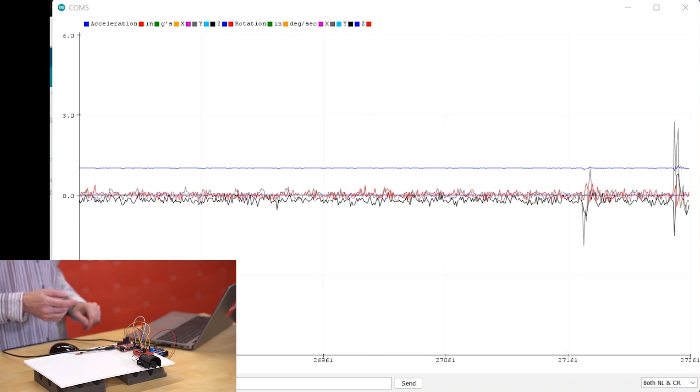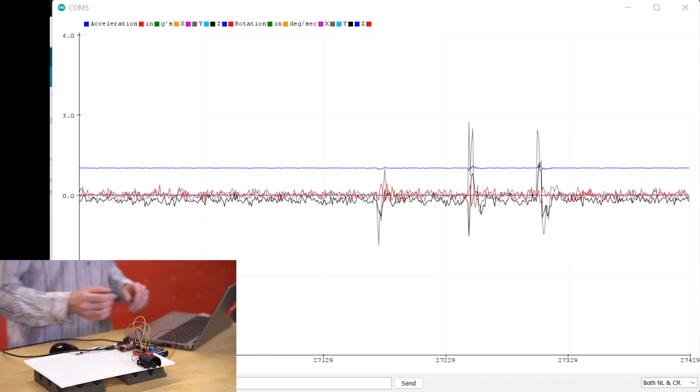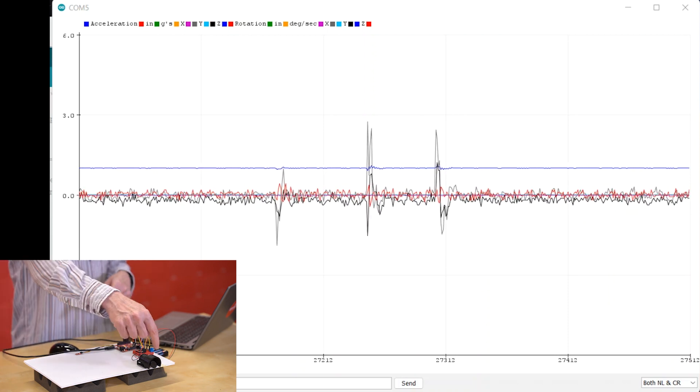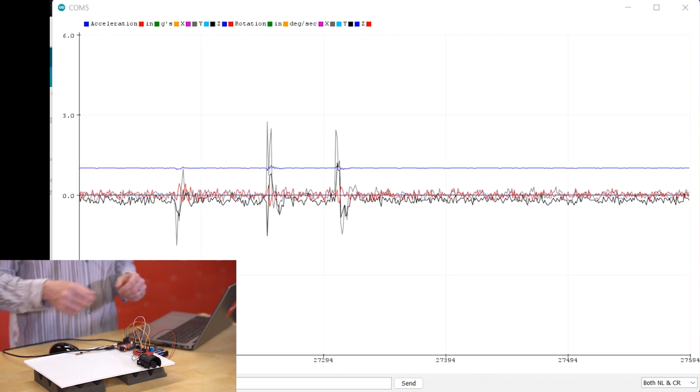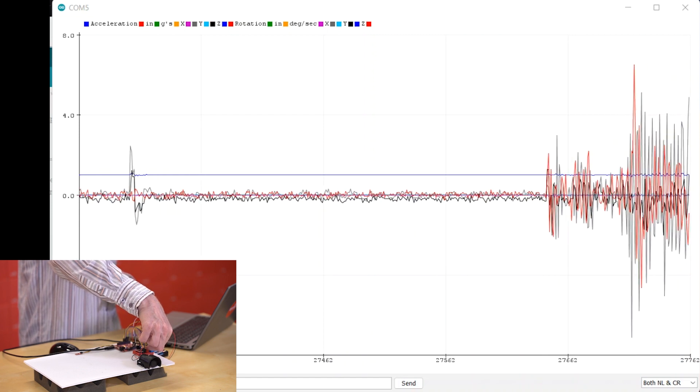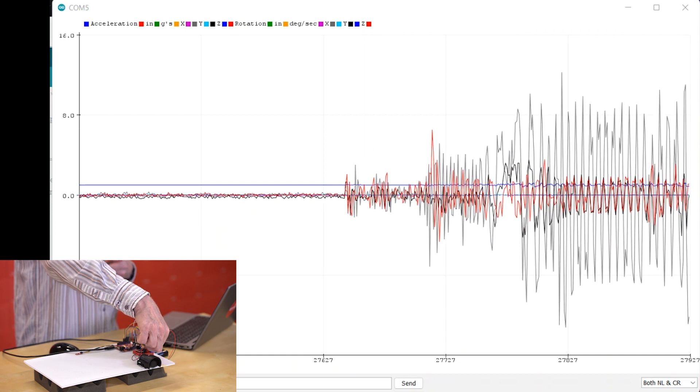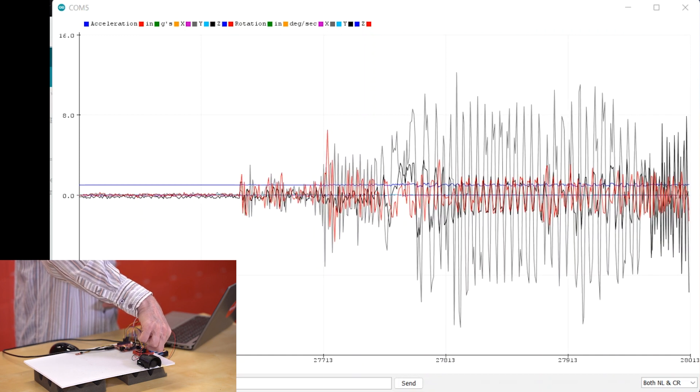You can see how sensitive this thing is. A little tap on the table over here is spiking it on the serial monitor. So I've got it on here. I've got a motor with an offset flywheel. And by changing the speed there, you can see immediately the readings that we're getting on our BMI270 here.